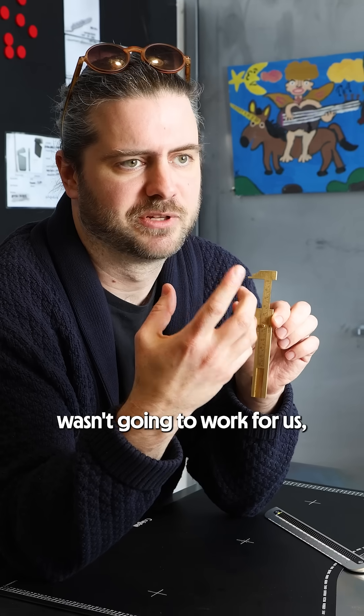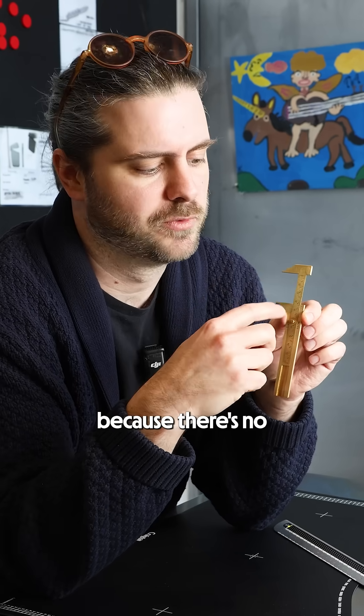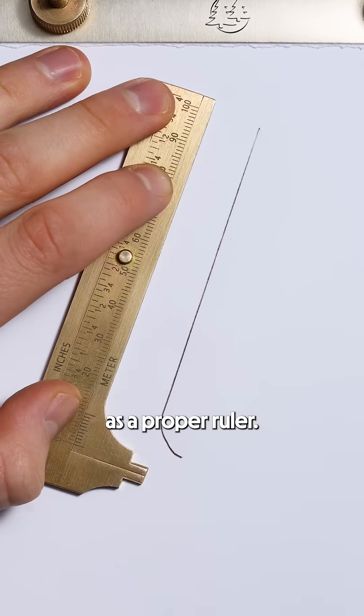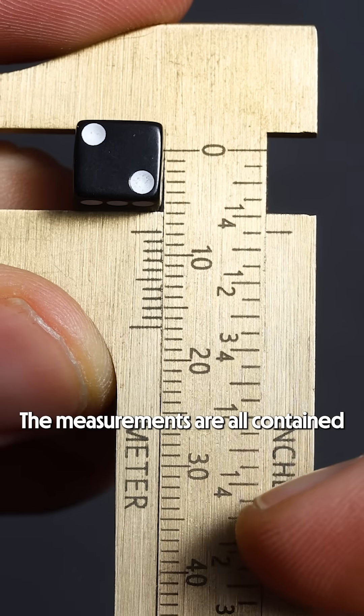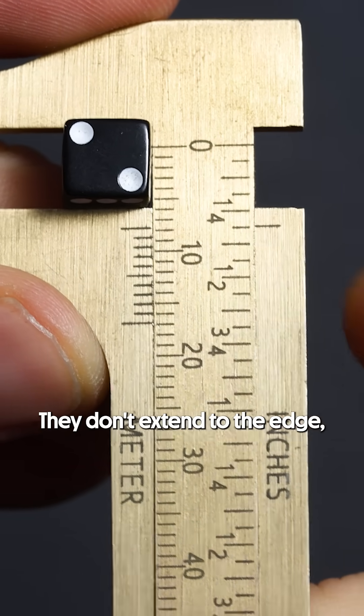This orientation solution wasn't really going to work for us because there's no way to use this easily as a proper ruler. The measurements are all contained within the rail. They don't extend to the edge.